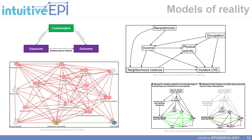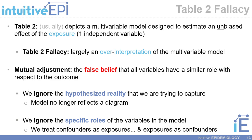These diagrams can range from very simple to something much more complicated. The website Dagitty can be used to create these. Table 2 usually depicts a multivariable model designed to estimate an unbiased effect of our exposure, which is typically one of several independent variables in our model. The Table 2 fallacy is largely an over-interpretation of our multivariable model. Mutual adjustment is the false belief that all variables have a similar or identical role with respect to the relationship that we are examining.